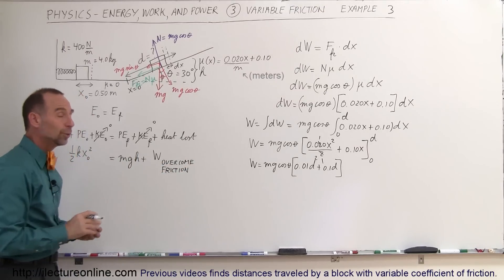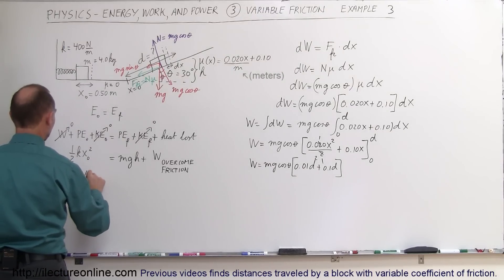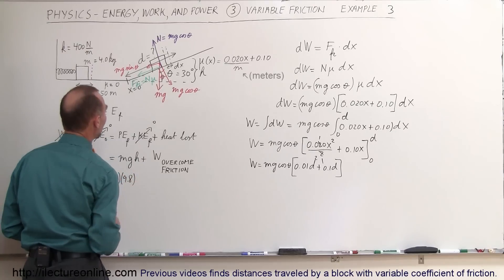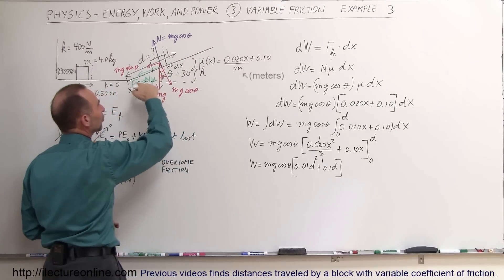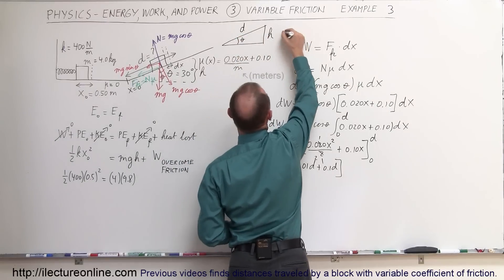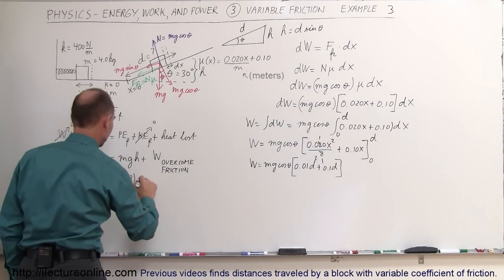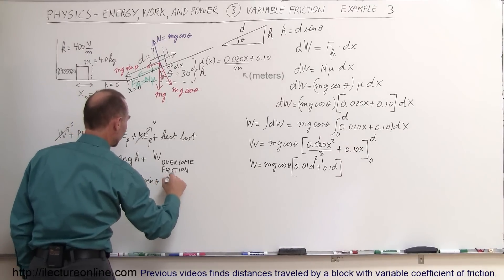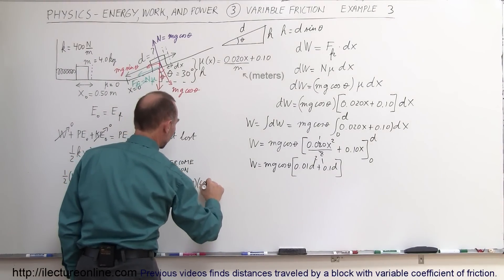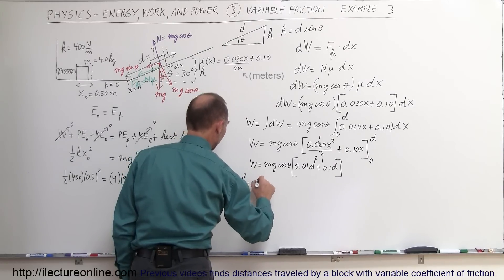Now plugging back into the energy equation with known values: one-half times k (400) times x (0.5) squared equals MGH plus work to overcome friction. The height h equals d sine theta from trigonometry, so this becomes: (½)(400)(0.5²) = (4)(9.8)(d sine 30°) plus the work term, which is (4)(9.8)(cosine 30°) times (0.01d² plus 0.1d).